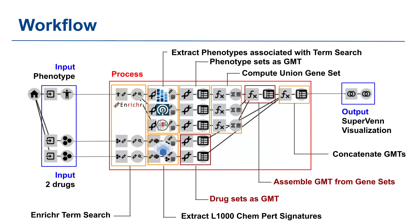With our combined GMT file ready, we proceed to create a superven diagram. This visual representation will illustrate the overlap between the genes regulated by the two drugs and the genes associated with the phenotype. The superven diagram serves as a powerful tool, helping us identify the intersections and connections between these gene sets.